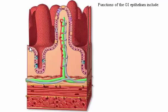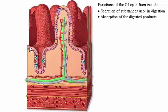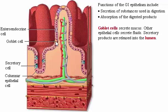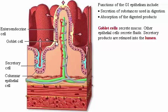Functions of the GI epithelium include secretion of substances used in digestion and absorption of the digested products. Goblet cells secrete mucus. Other epithelial cells secrete fluids, such as acid in the stomach and water and salts in the small intestine. Secretory products are released into the lumen.